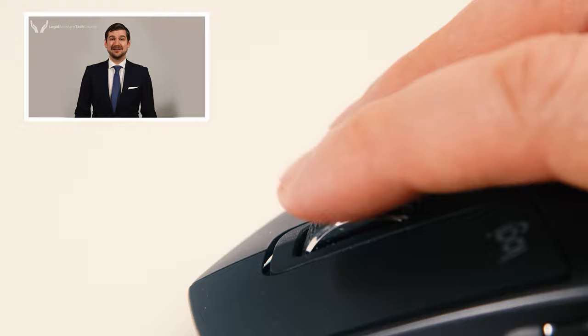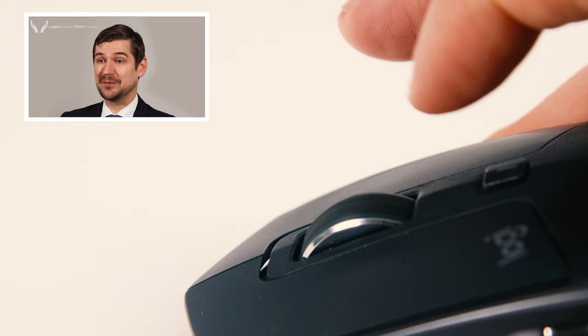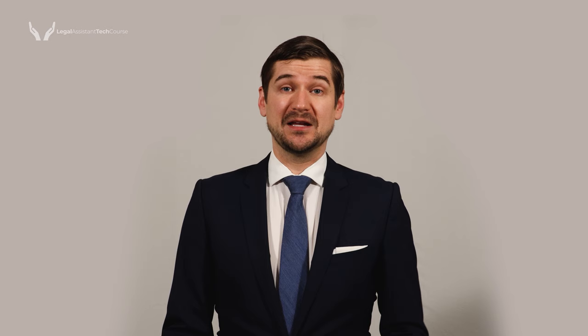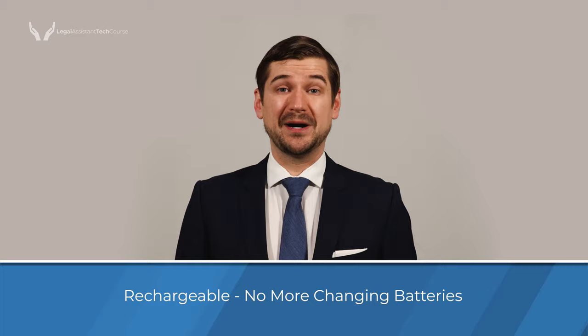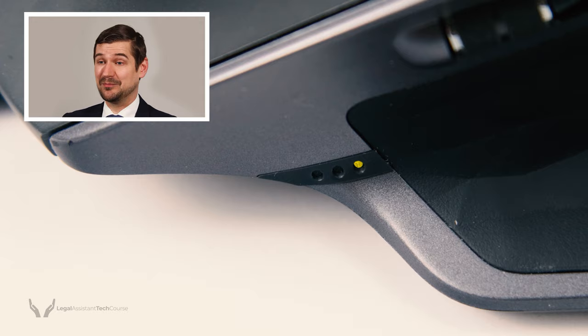In terms of scrolling, performance mice feature advanced speed adaptive technology which adjusts the speed of the wheel as you scroll. As you scroll more and more, the wheel switches to a silent, free spin mode which causes extremely quick scrolling, making it faster and easier to scroll long documents, websites, and folders. In terms of battery life, many performance mice are rechargeable, which means no more buying or changing batteries. My mouse goes many months on a single charge, even though I use it frequently every day.